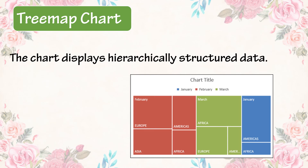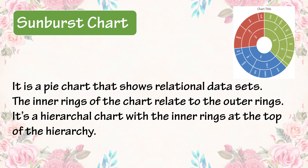The Treemap chart displays hierarchically structured data. Sunburst chart: it is a pie chart that shows relational data sets. The inner rings of the chart relate to the outer rings. It is a hierarchical chart with the inner rings at the top of the hierarchy.